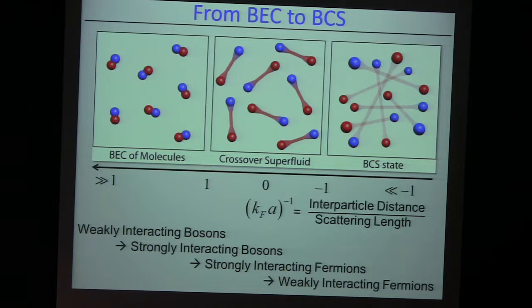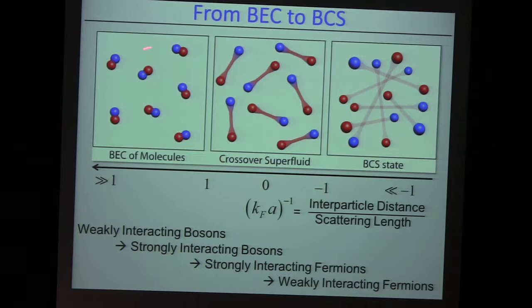Let's first look at the Feshbach resonance picture. Here we have this wonderful tunability of the scattering length. We can make the scattering length weak and negative — negative means you have weak attraction. The wave functions are ever so slightly pulled in, so that the atoms actually attract each other. And then we know from BCS that the ground state should be a superfluid of very fluffy, very weakly bound Cooper pairs.